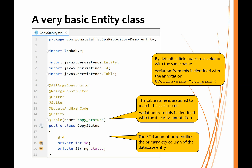We're also using a table annotation that identifies which table this class relates to. The assumption is that the class name and the table name will be the same, and if that's true we don't need this table annotation. But if the class name is not identical to the table name, then we use the table annotation to identify the name of the corresponding table. By default, these field names map to corresponding columns in the database table that have the same name. If there is any variation, we can put a column annotation in front of the field to identify the database table column name. The ID annotation allows us to identify which field is going to contain the value of the primary key in the database table.